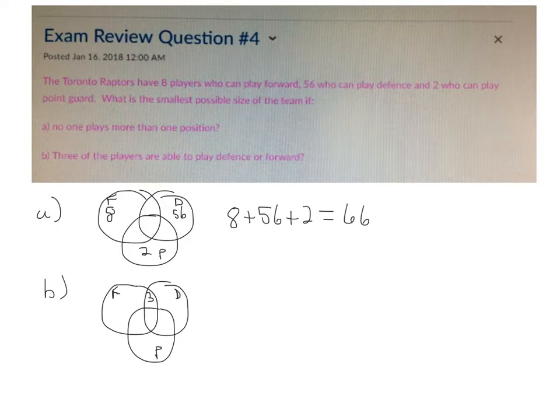And so if there are eight altogether who can play forward, that means we would only need to add five more in here. And if there are 56 altogether who can play defense, then three of them are in the intersection. That leaves 53 in here. And still we have our two point guards down here who are not in the intersection.